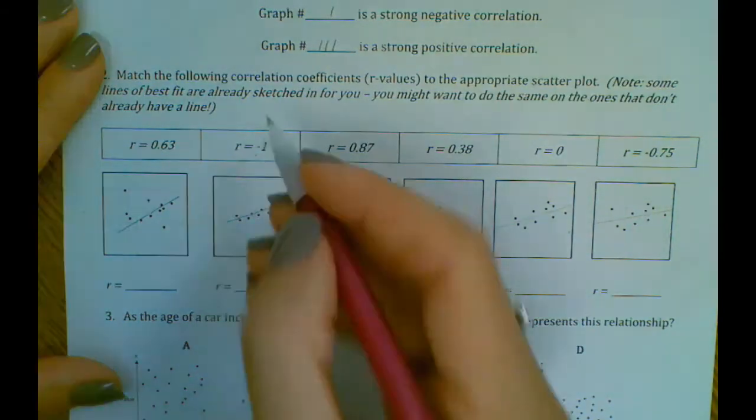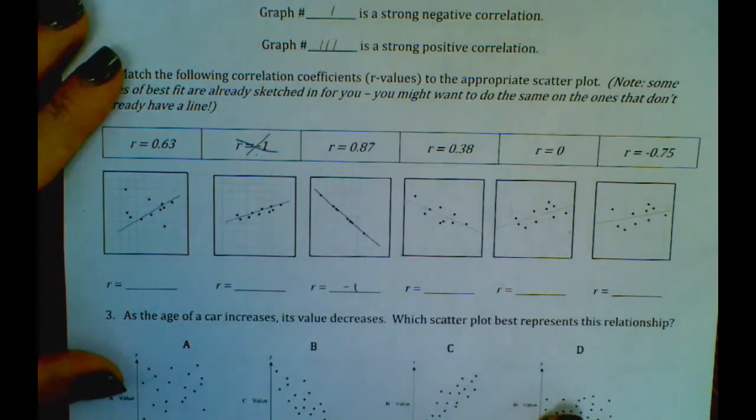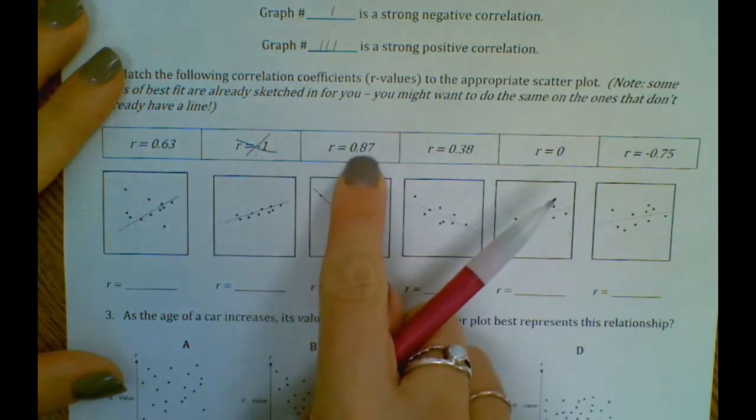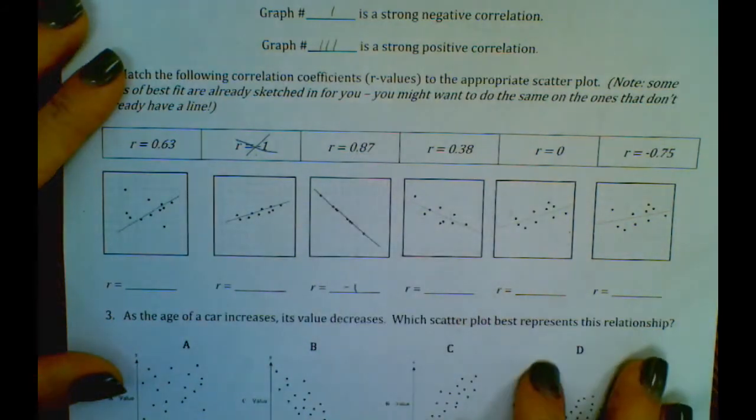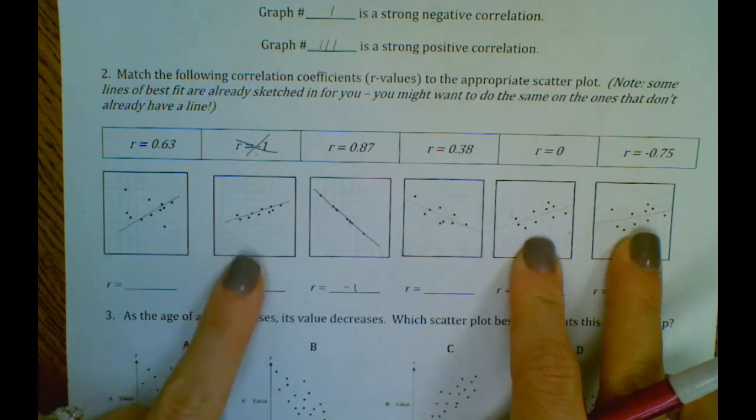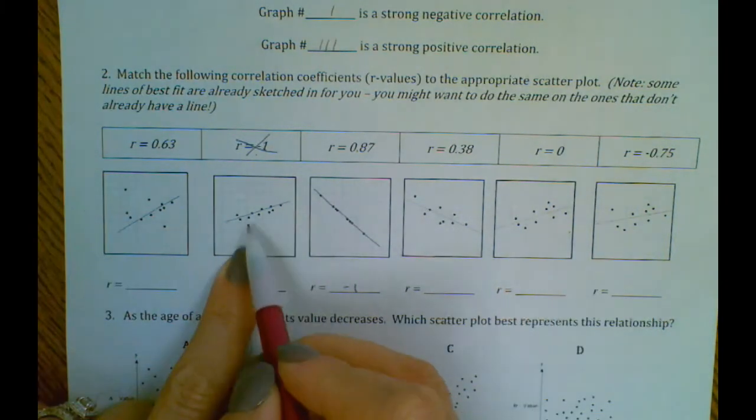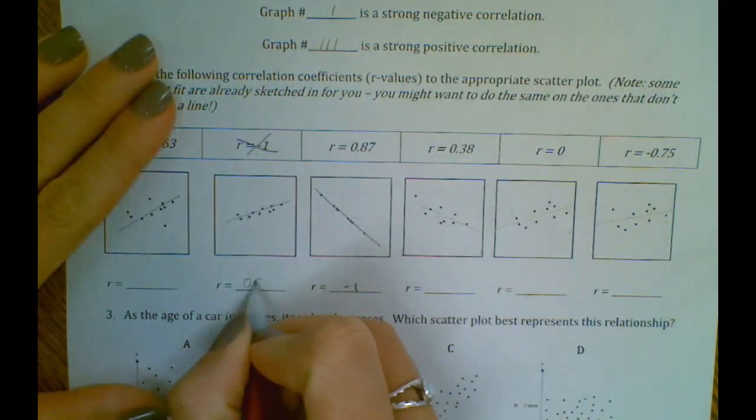Okay, so we're done with that one. Our next strongest is this one here, this is the closest to one. This is a positive, so we want the one that's positive. So that's positive, this one's positive. So I would say this is definitely the one that's closest together, so that would be our 0.87.